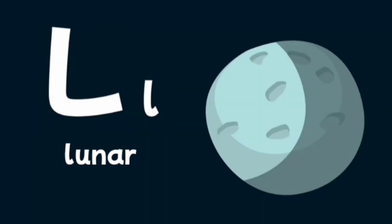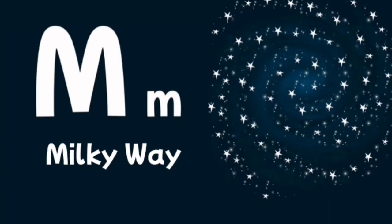L is for lunar, of or having to do with the moon. M is for Milky Way, the name of our galaxy that includes the solar system.